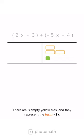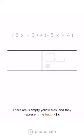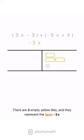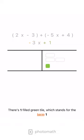There are three empty yellow tiles, and they represent the term negative 3x. There's one filled green tile, which stands for the term 1.